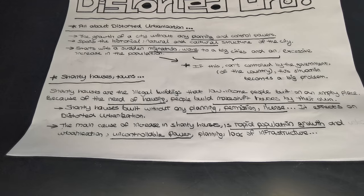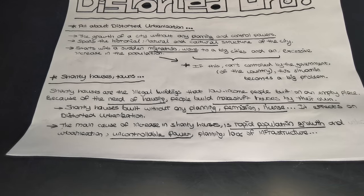Because the requirements of a city get bigger when population grows, and also when a migration wave happens, shanty houses and towns appear. Shanty houses are the illegal buildings that low-income people build on empty places. Because of the need for housing, people build makeshift houses by themselves. We can see shanty houses in cities with distorted urbanization because people build them without any planning. If there is a control power, the government can see the number of shanty houses and gauge the distorted urbanization level in the city.